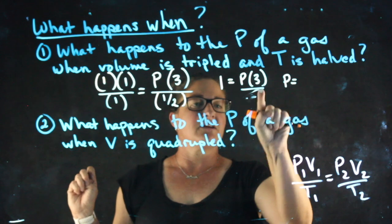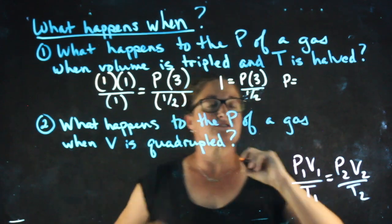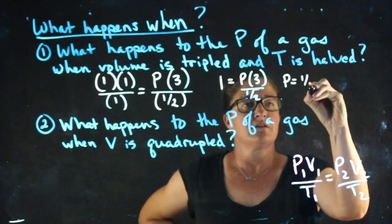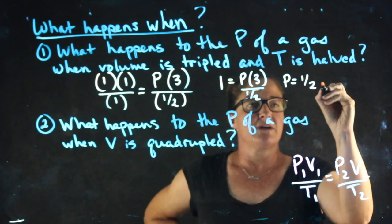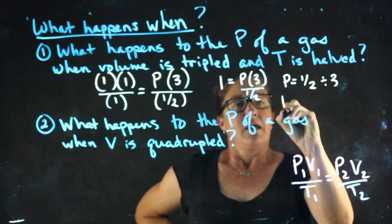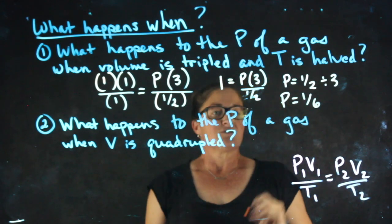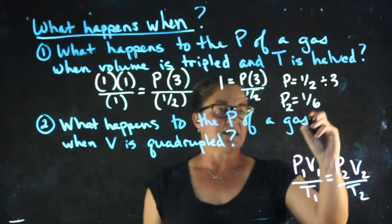Or actually I'm going to leave it in here as one half. So bringing that to the other side, I'm going to have one half in the numerator, and then I'm going to divide that by three. And the new pressure is one sixth of the old pressure. So P2 equals one sixth P1.